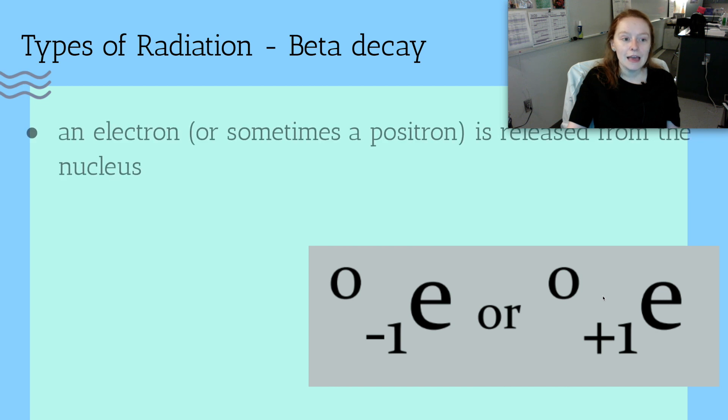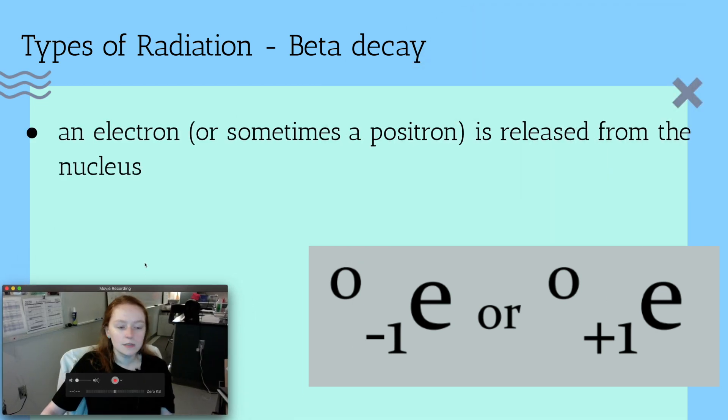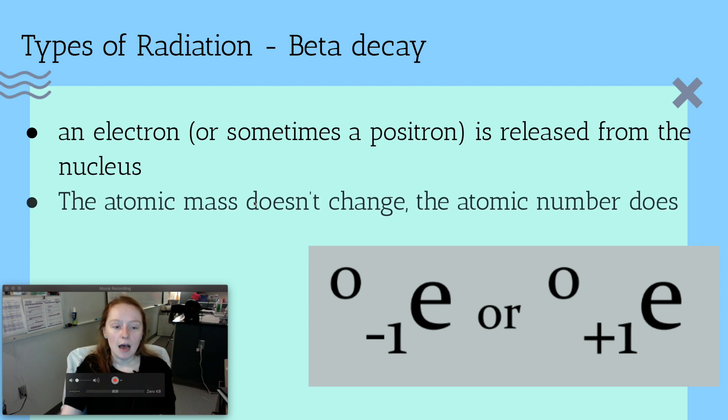Next, we have beta decay. Beta decay is where you have an electron or sometimes a positron, which is a positive electron, if that makes any sense, released from a nucleus. So basically you have a proton that's going to shoot out a positron and turn into a neutron, or we have a neutron that's going to shoot out an electron and become a proton. So this is a way for protons and neutrons to change identities. The atomic mass is not going to change, because you didn't get rid of anything in the nucleus, but your atomic number, the number of protons, will either go up or down.